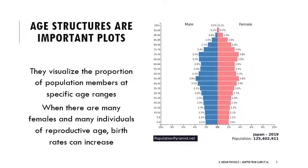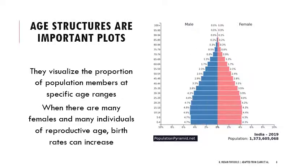We can contrast Japan with somewhere like India, where there's not as much longevity and fewer people in higher age ranges, but a large portion of the population is very young — reflecting very high birth rates.